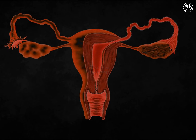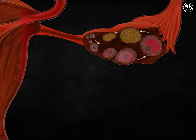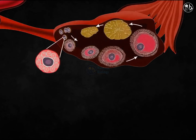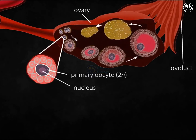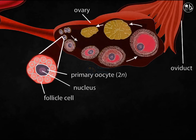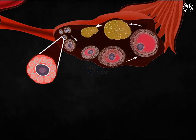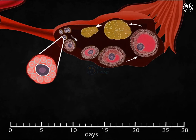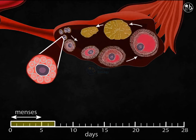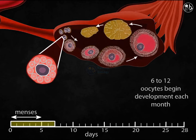Each of a woman's ovaries contains roughly two lakh immature eggs known as primary oocytes when she reaches sexual maturity. A diploid primary oocyte is arrested in prophase one of meiosis. Each primary oocyte is surrounded by a layer of follicular cells. A follicle is made up of an oocyte and its follicle cells. The first day of menstruation marks the start of an ovarian cycle, which lasts roughly 28 days.